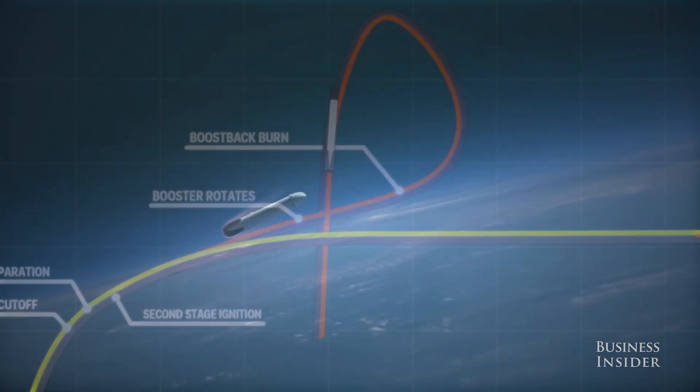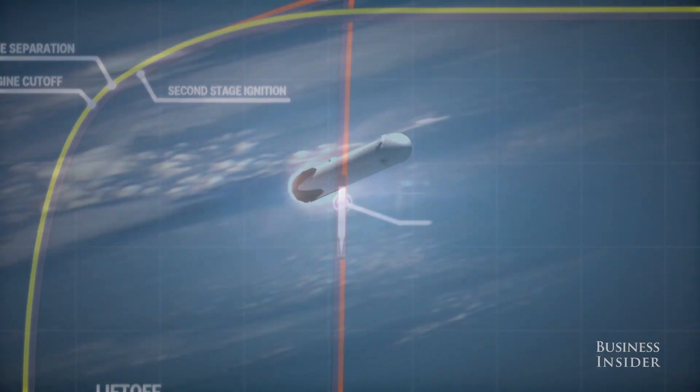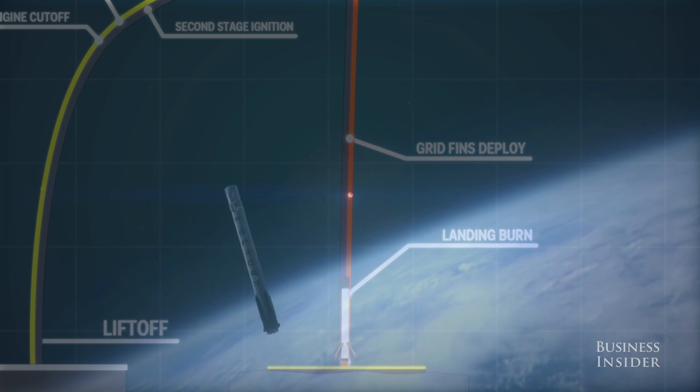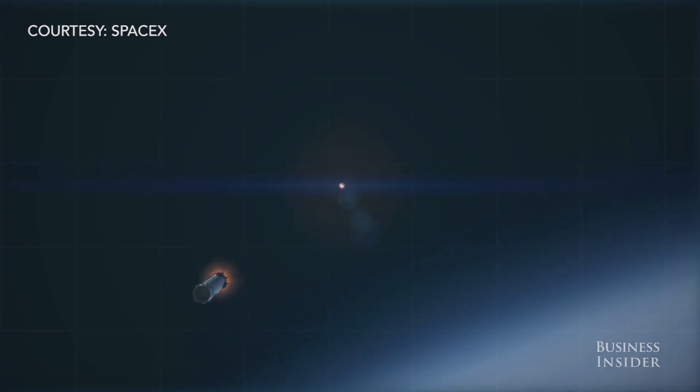As the first stage re-enters the atmosphere, the rocket is falling at supersonic speeds. Its most important jobs now are to slow down, remain vertical, and get to the platform in the ocean. After somersaulting, the rocket reignites its engines, which sets it on the right trajectory path as it falls.